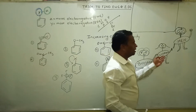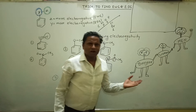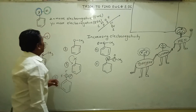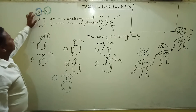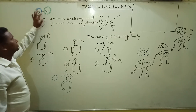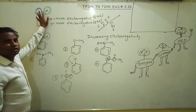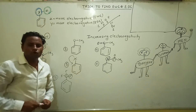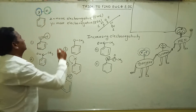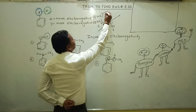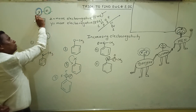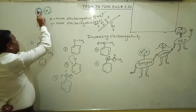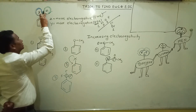On the board you see benzene. Let's go toward our trick. If benzene has a Y group attached, and a Z group is attached to Y, then if Z is more electronegative, it is an electron withdrawing group. If Y is more electronegative, it is an electron donating group.